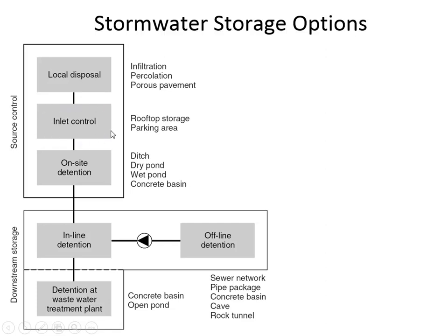Inlet control — I'll show you a picture of parking area water storage. It's not so much getting water into the soil, but trying to hold onto it for just a few minutes to delay the peak before it gets concentrated into a network. The last thing that can be considered source control, where you're stopping water before it accumulates, is to put it in a pond at the development in question. The two options — inline detention and offline detention — are both about holding onto the water temporarily as it travels from where it's generated to its ultimate destination.